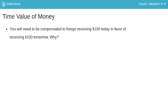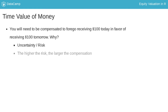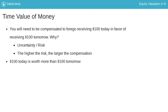We have to be compensated for taking on that risk of waiting one year. The higher the risk, the larger the compensation. Because of this, the value of $100 you expect to receive next year is worth less than $100 today.